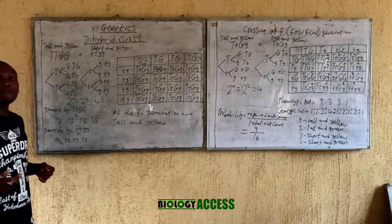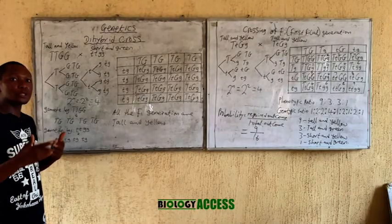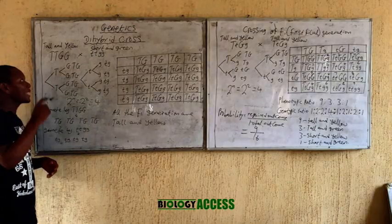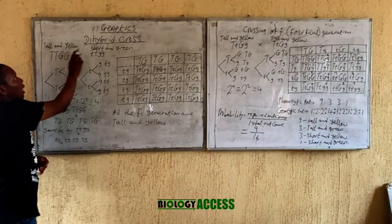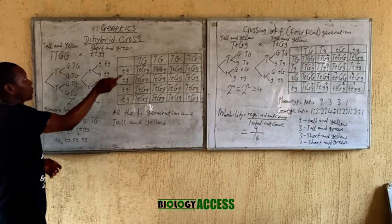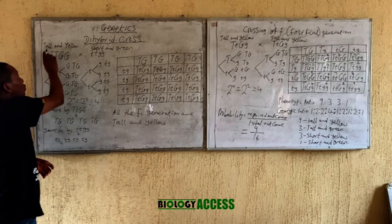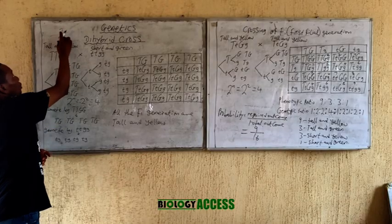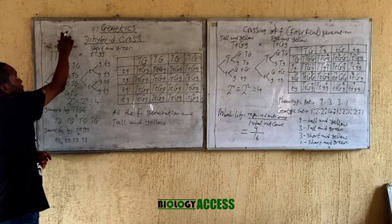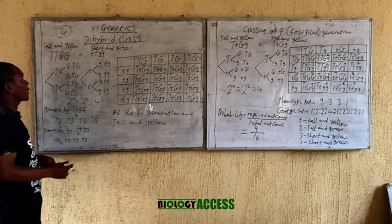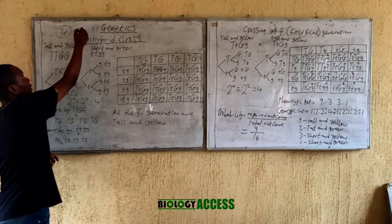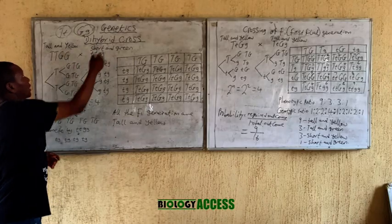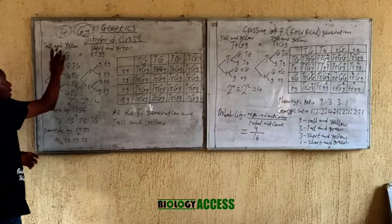In a dihybrid cross, it involves the crossing of organisms studying two characters. In this case we'll be using height and color — tall and short for height, and yellow and green for color. Tall is dominant over short, which means if both are present this organism will be tall. Yellow is dominant over green, so if both are present this organism will be yellow.